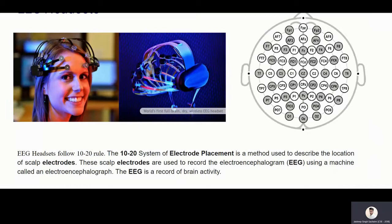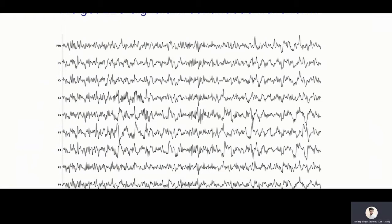Now, EEG headsets follow some 10-20 rule, the 10-20 system of electrode placement. And you can see that this is basically a standard set for all the EEG headsets. In the figure, you can see that this is the standard.